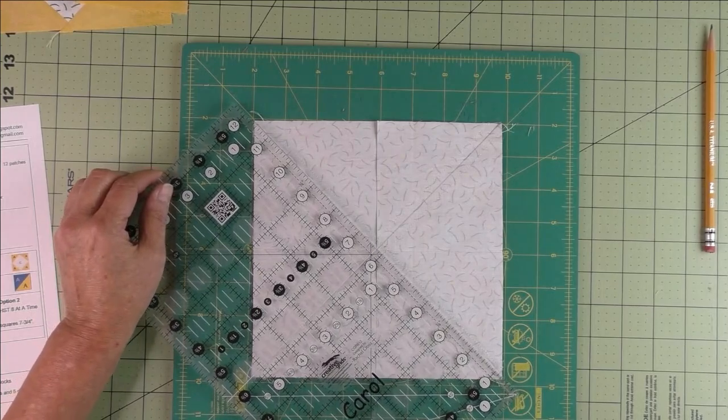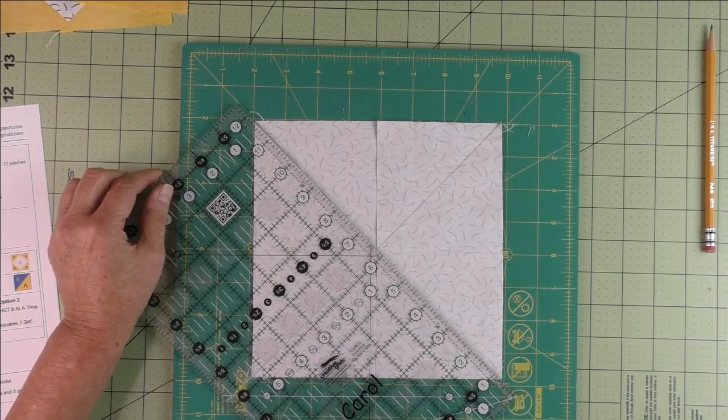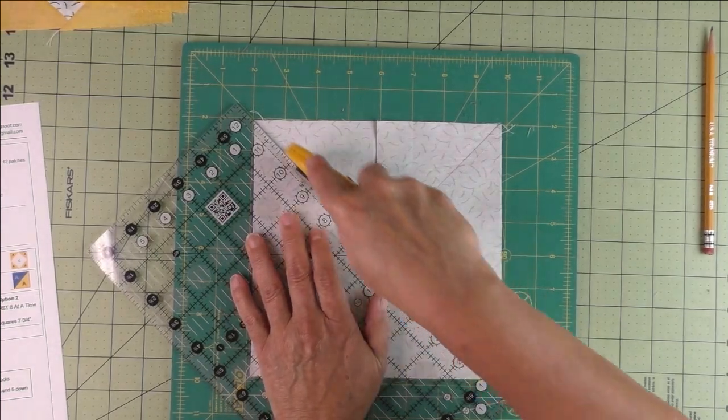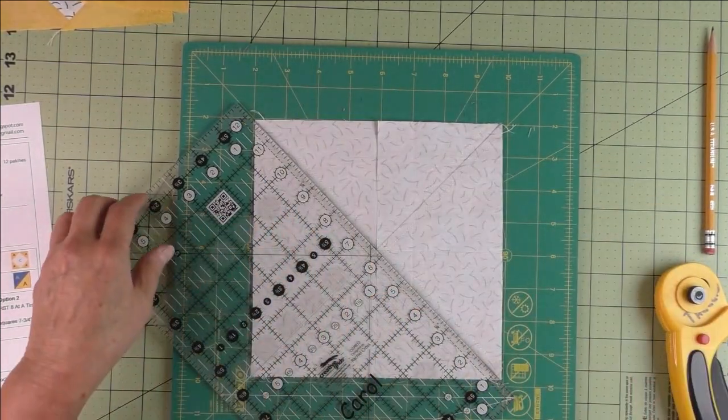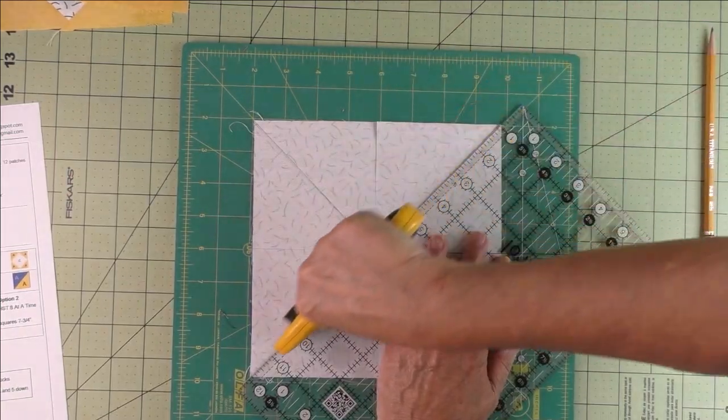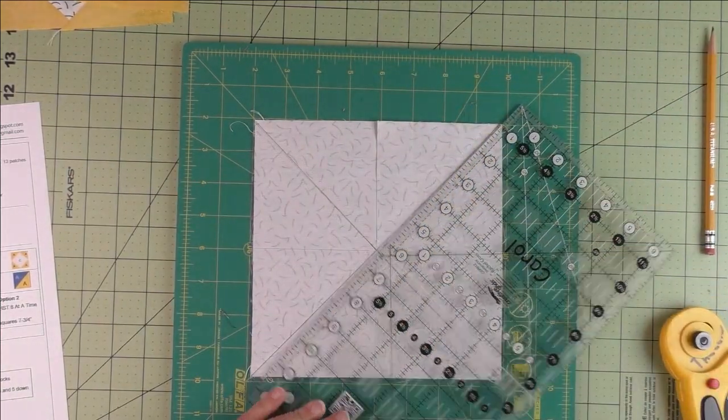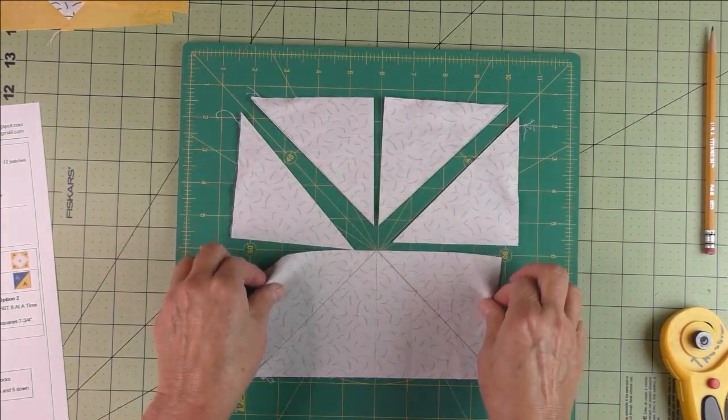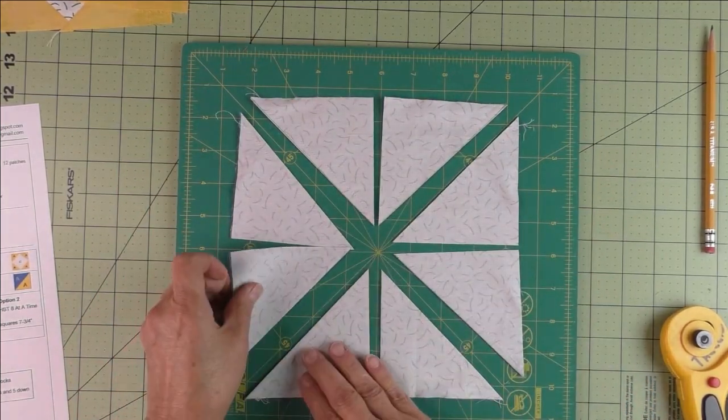Now we're going to do the first diagonal. Cut on this drawn line as well.